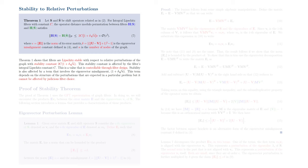The stability is also affected by a term that involves the eigenvector misalignment constant, the factor 1 plus delta square root of n. This term depends on the structure of the perturbations that are expected in a particular problem, but it cannot be affected by judicious filter choice.